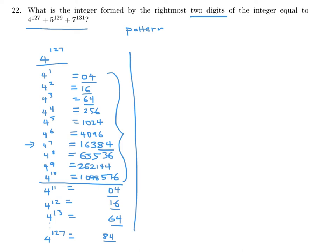We still have 5 to the power of 129. Fortunately, that one is easy — 5 to the power of anything always ends in 5, and the last two digits are always 25. So if you extrapolate all the way up to 5 to the power of 129, the last two digits are 25.